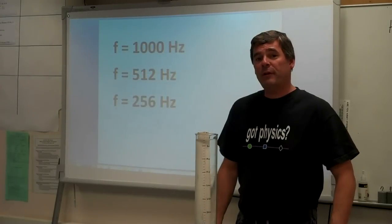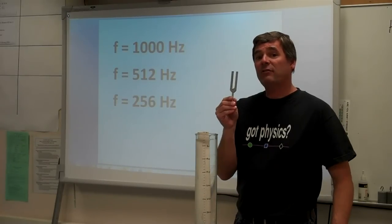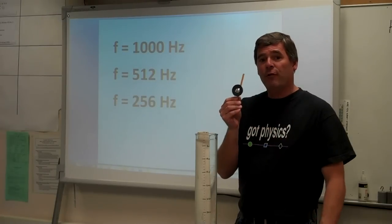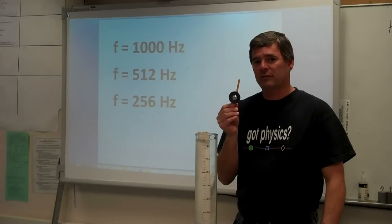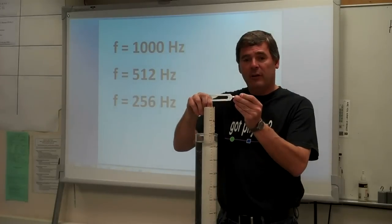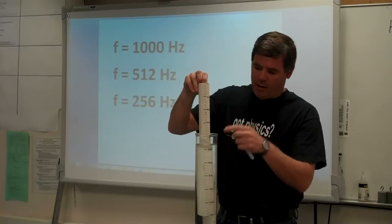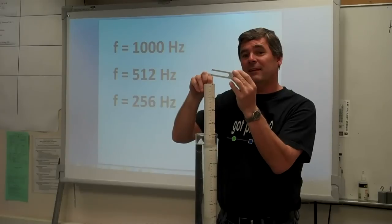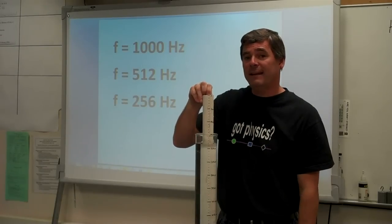We'll use three frequencies of sound. I'll use a tuning fork for 1,000 hertz, and then I'll use the speaker for 512 hertz and 256 hertz. I'll raise the tube. You listen for an increase in volume. Look at the markings on the tube. Find the length of the tube that you hear the increase in volume and record that length of tube in your datasheet.